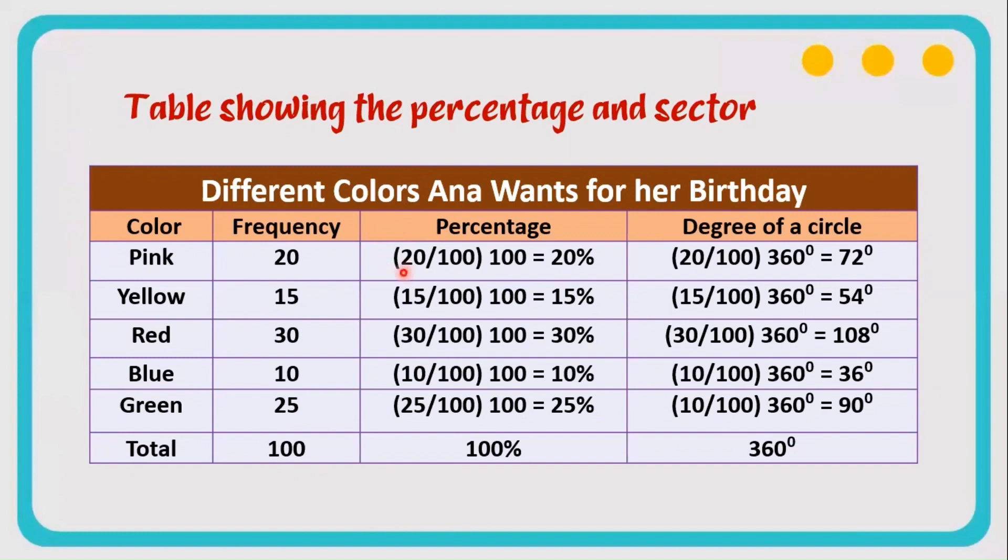The 100 here comes from the total and multiply it by 100, which is equal to 20. That's what I told you just a while ago that the percentage is equal to the number itself. We need to follow the formula until all the numbers are converted to percentage and make sure that the total of that is 100%. Next is the degree of a circle.